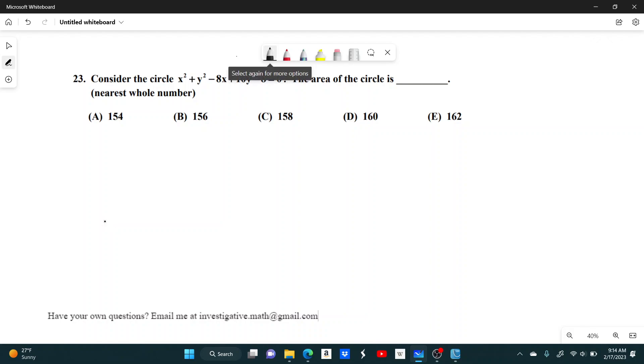So to do this question, we're going to need to use a standard form of a circle, which, if you didn't know, this is the standard form of a circle: x minus h squared plus y minus k squared equals r squared.